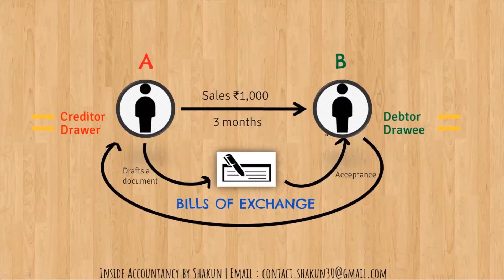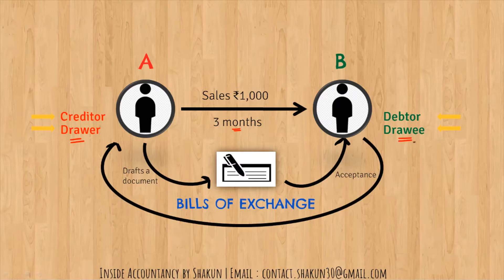In the example I used previously: A is selling goods to B; B promises to make payment after three months. A drafts the document, so A is the drawer. B is the drawee — the person on whom the bill is drawn and who has to pay. After B gives acceptance, the document becomes a bill of exchange and is returned to A.